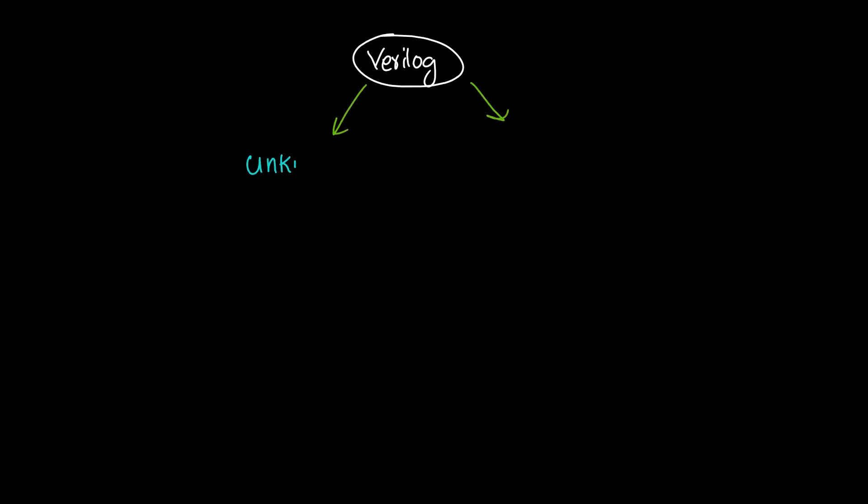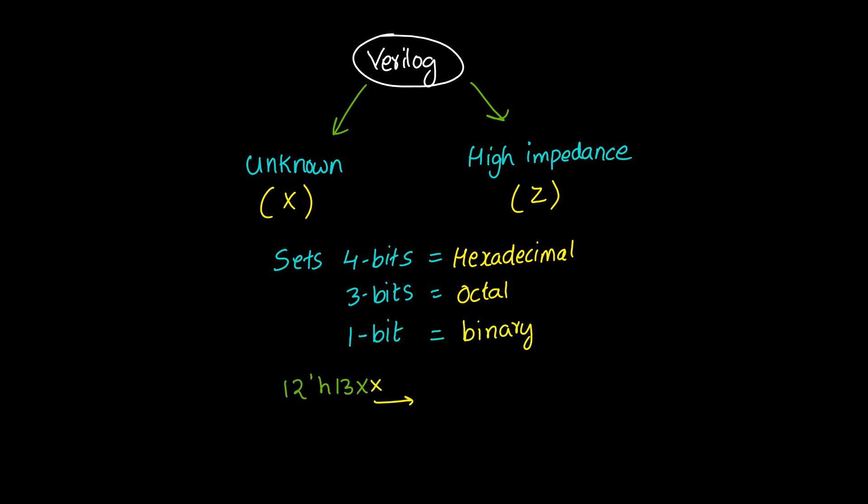Verilog has two symbols for unknown and high impedance values. These values are very important for modeling real circuits. An unknown value is denoted by an X. A high impedance value is denoted by Z. An X or Z sets four bits for hexadecimal base, three bits for octal base, and one bit for binary base.